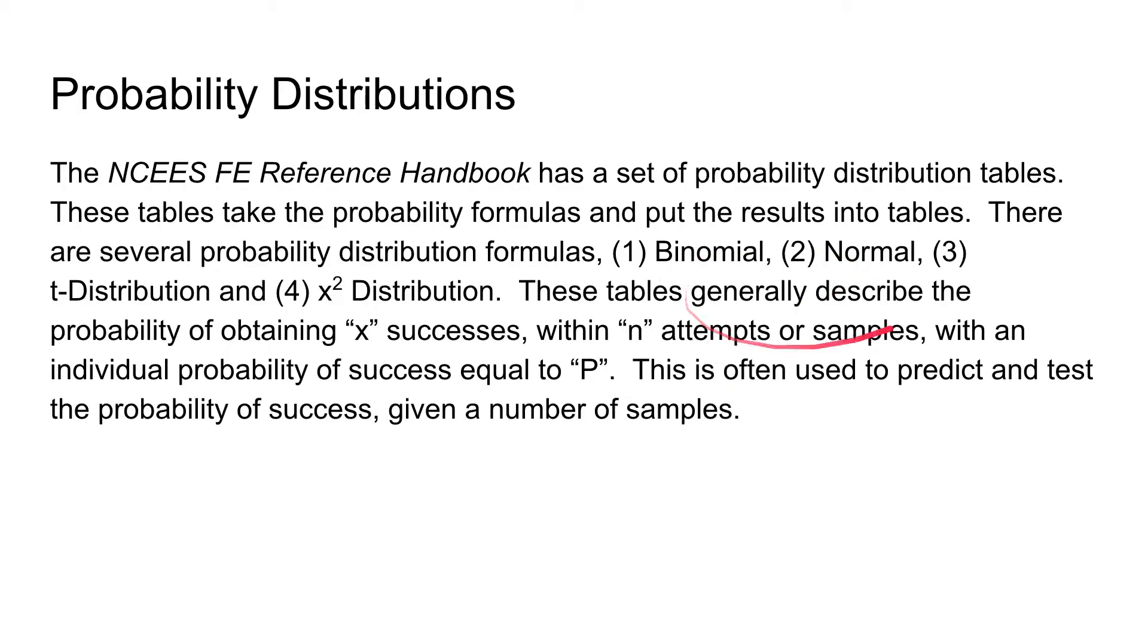So I just discussed the three different probability distributions, but there's also a fourth, the x squared distribution, which we've covered after the t distribution.